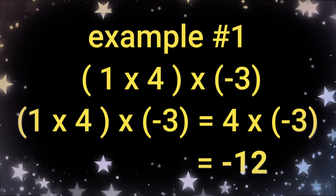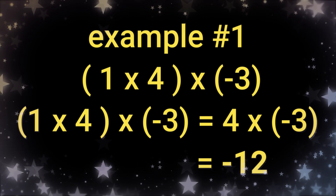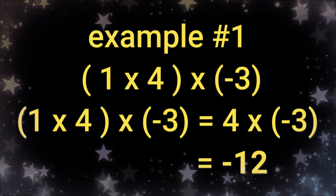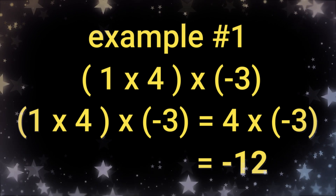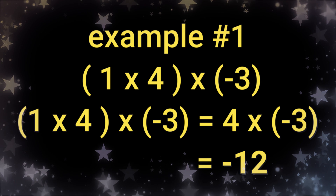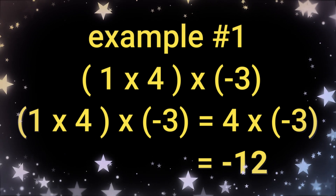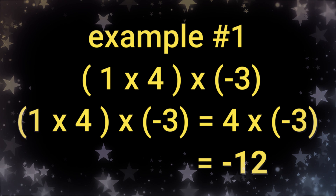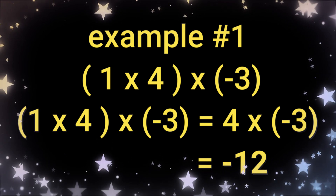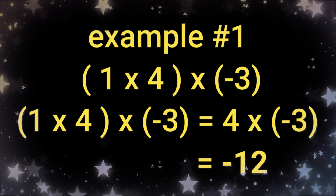Let's have an example. Quantity 1 times 4 times negative 3 — when you multiply 1 times 4, you will get 4. Then multiply it by negative 3, where 4 times 3 is 12, but positive times negative is negative, so you will get negative 12.